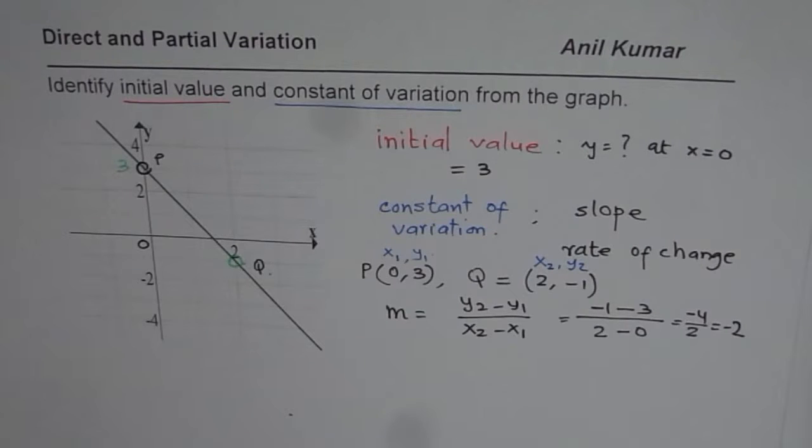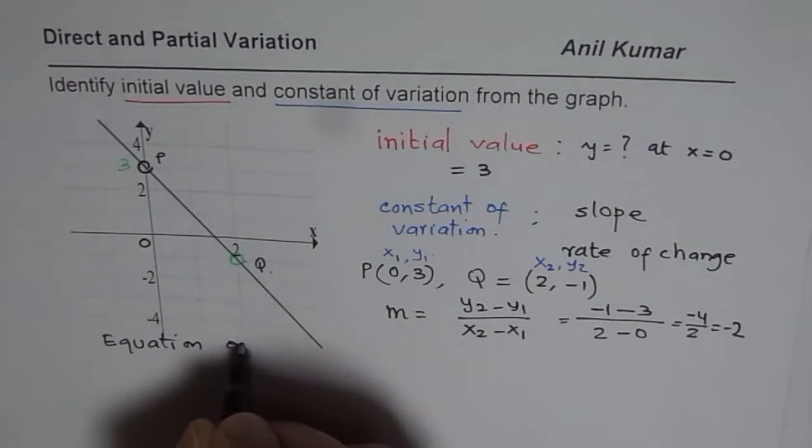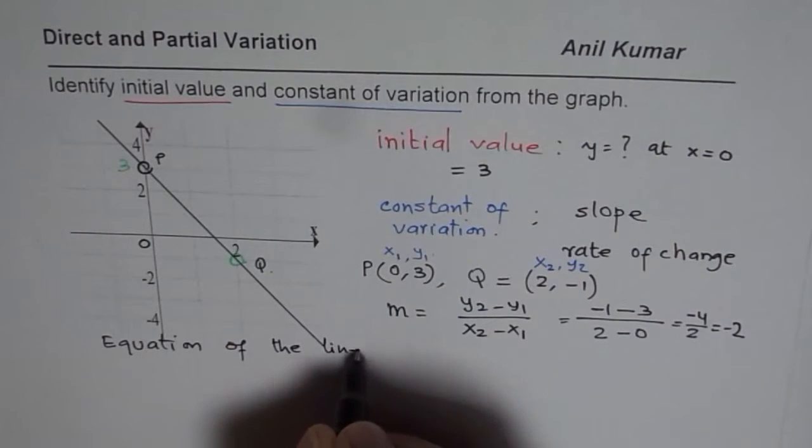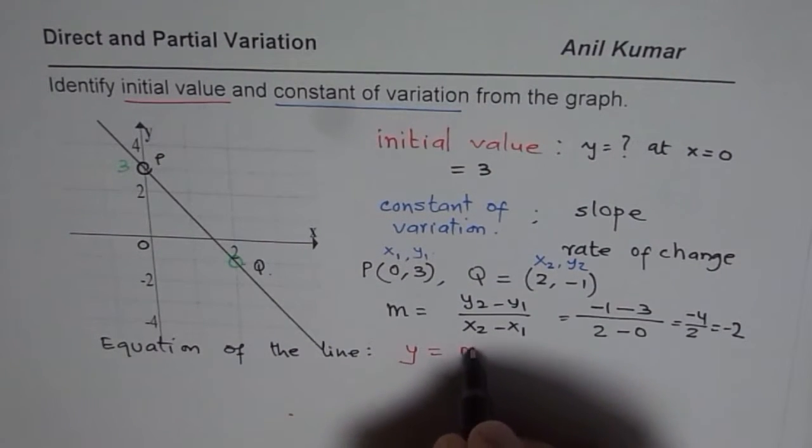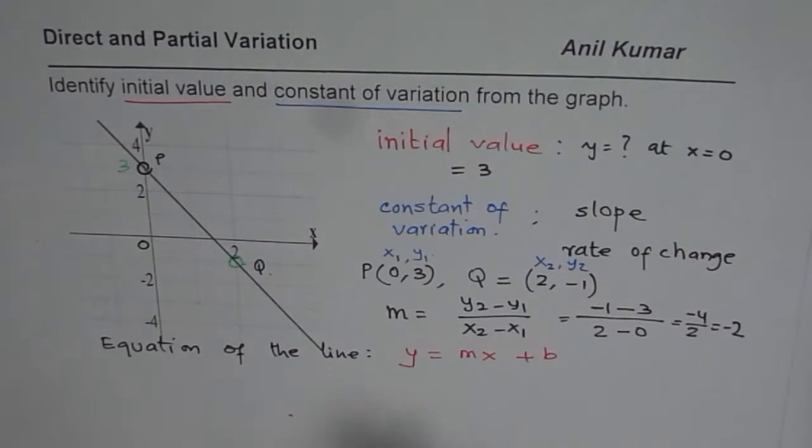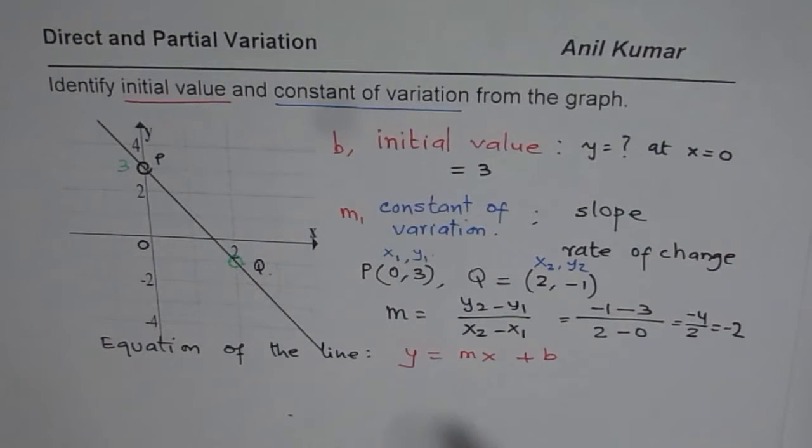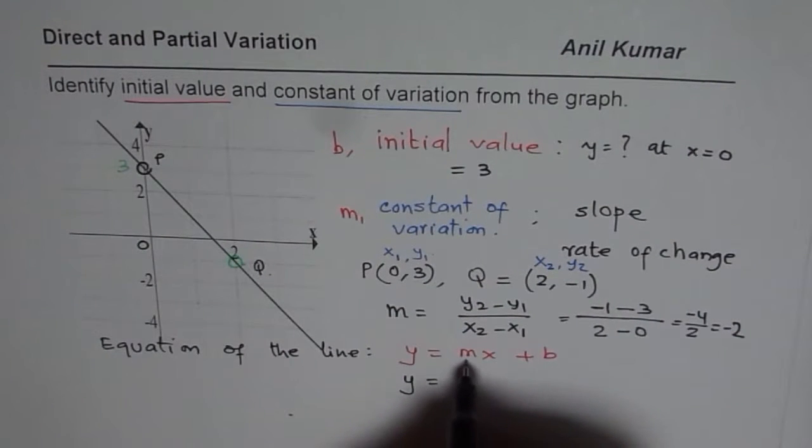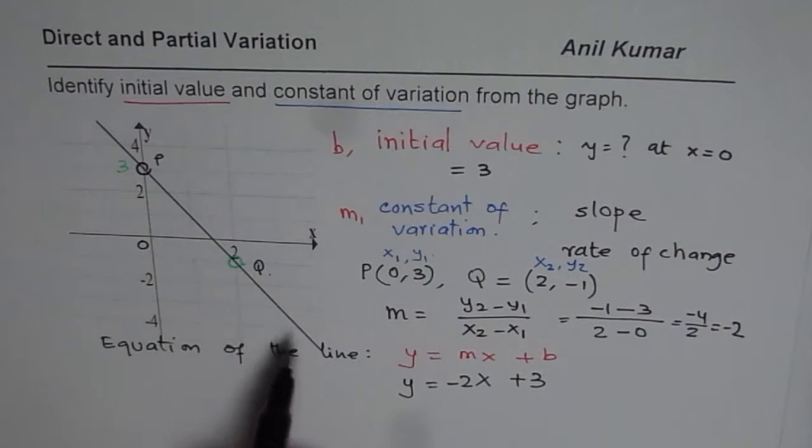One more thing of interest is to write the equation of the line. In general, the equation of the line is y = mx + b, where b is the initial value and m is the constant rate of change. In this particular case, we have found both of them. So we can write y = mx. The rate of change is -2, so -2x. And b, the initial value is 3, plus 3. That gives us the relation y = -2x + 3 which represents this variation.